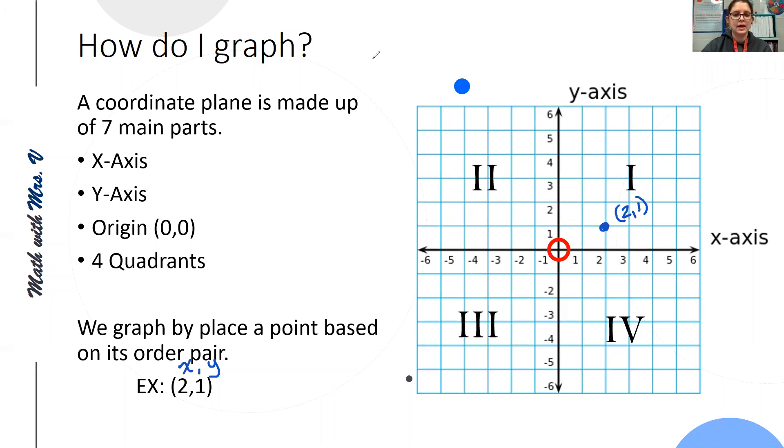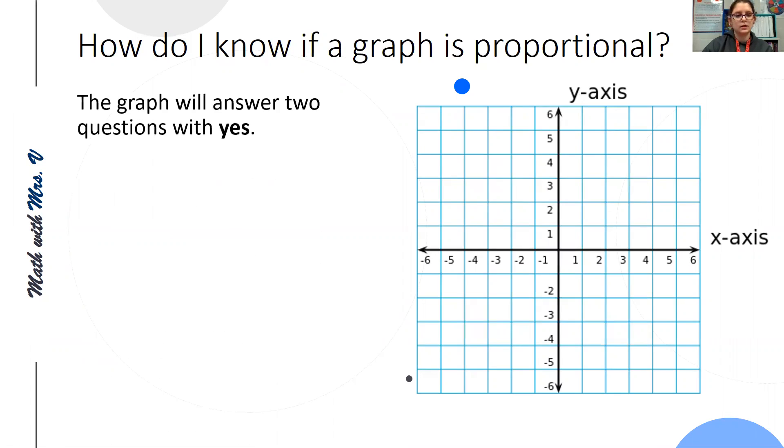So now we're going to look at how to tell if a graph is proportional or not. If it's proportional, it will answer two questions with yes. Is it a straight line? And this sounds odd, but we mean in any direction. It can be a horizontal straight line, a vertical straight line, or it could be some sort of diagonal straight line. But it will have no bends and no curves in it. It will be straight so much so that you could take a ruler and line it up with the edges.